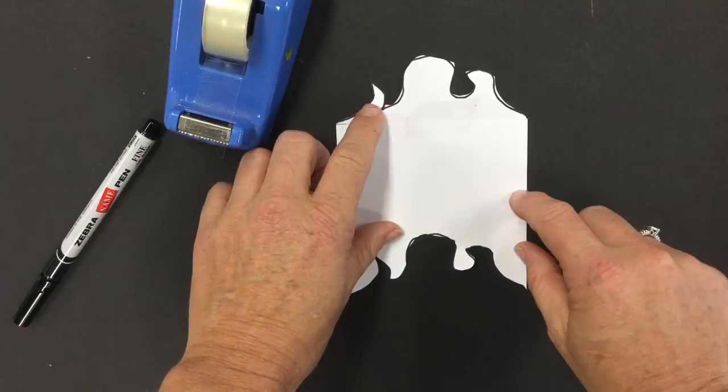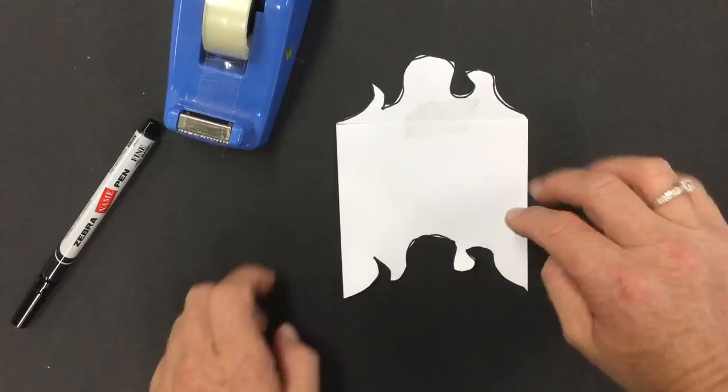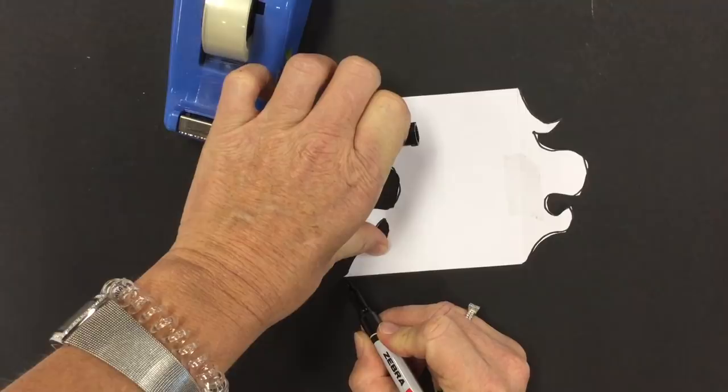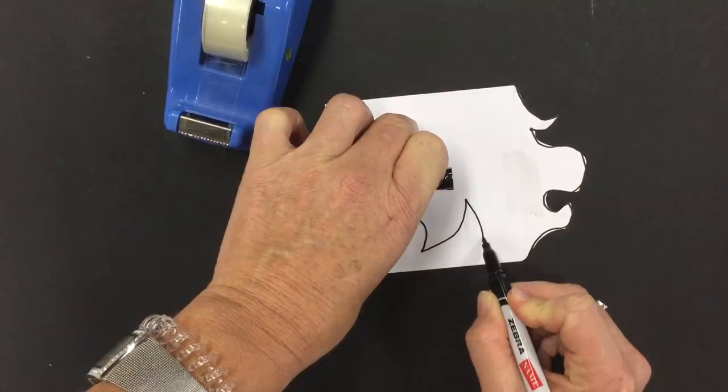My next step is to do the exact same thing on the opposite side. I'm going to go corner to corner, creating a line. Again, keeping it fairly simple. Maybe something like that. And over to the corner. There's my line. And I'm going to cut it.